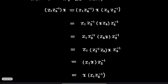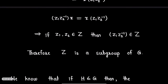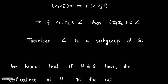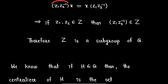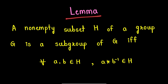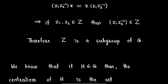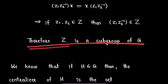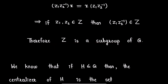We have started from z1·z2⁻¹·x and ended with x·z1·z2⁻¹. So we get z1·z2⁻¹·x equal to x·z1·z2⁻¹, meaning z1·z2⁻¹ commutes with all elements of group G. Thus z1·z2⁻¹ is a member of the center of group G, and by the lemma, Z — the center of G — is a subgroup of G.